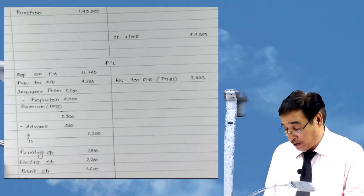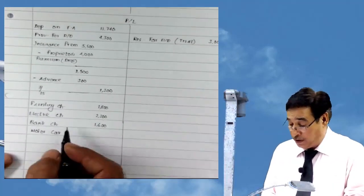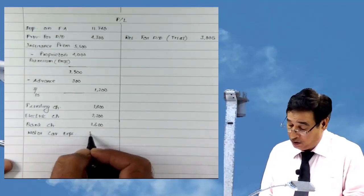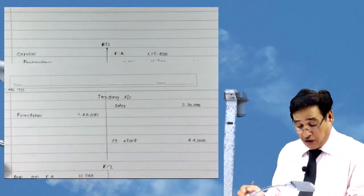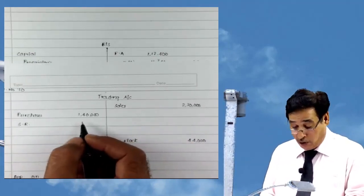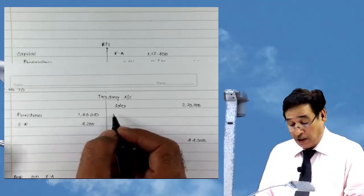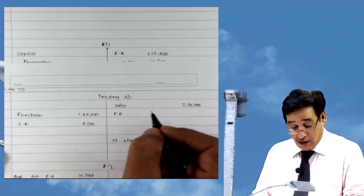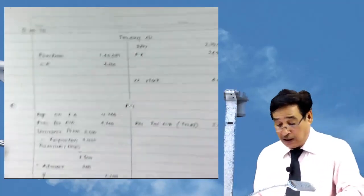Motor car expenses: 3,600. Then returns — the item given towards the debit side is sales return. I can subtract sales return from sales, but I am writing it over the opposite side. Similarly, returns given towards the credit side are purchases returns, and I'm writing it over here: purchases returns 2,600 — putting it towards the opposite side means we are subtracting it from purchases.